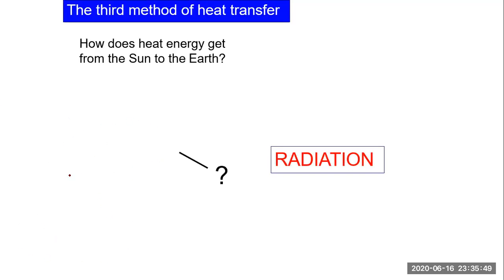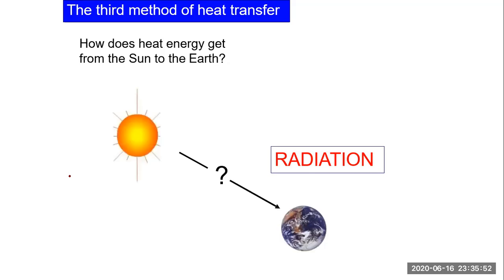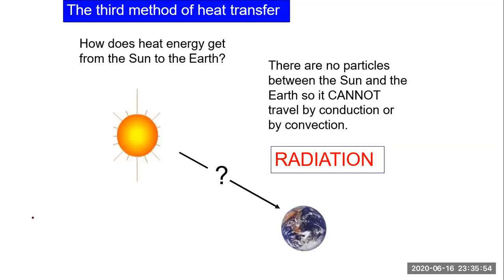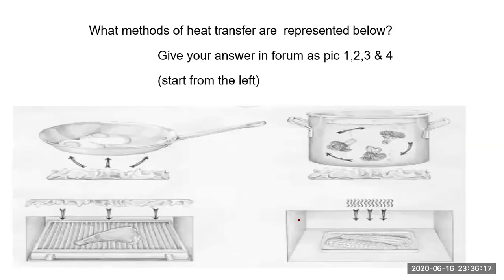Consider this example: how does heat energy get from the sun to the earth? There are no particles between the sun and the earth, so heat cannot travel by conduction or convection — it travels directly by radiation. When this radiant energy strikes the earth, our earth absorbs that energy and transforms it into heat. So that was conduction, convection, and radiation.